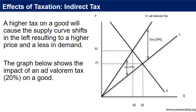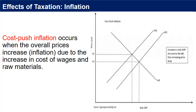The impact of indirect tax is more of a microeconomic issue. A higher tax on a good will cause the supply curve to shift to the left, resulting in a higher price and less demand. The graph shows the impact of an ad valorem tax on a good. A rise in tax — excise or VAT — can lead to an increase in prices, causing cost-push inflation. Cost-push inflation occurs when overall prices increase due to the increase in cost of wages and raw materials. The higher costs of production result in a decrease in aggregate supply, and since demand for goods hasn't changed, the price increases are passed on to consumers, creating cost-push inflation.